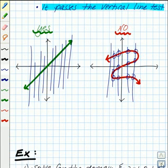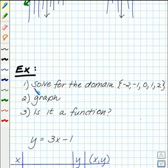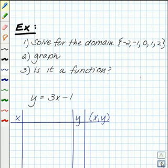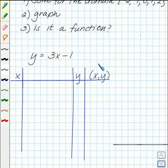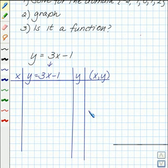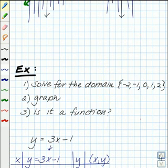Let's go ahead and do an example. First, we want to solve for the domain negative 2, negative 1, 0, 1, 2. Then we'll graph, and then we'll decide if it's a function. So here's our problem: y equals 3x minus 1. The first thing we do is make our table — an x column, then a column for our function where we write y equals 3x minus 1, a y column, and an ordered pair column. We're going to input for the domain negative 2 through positive 2.